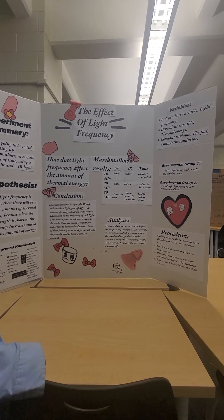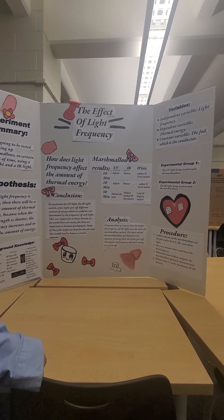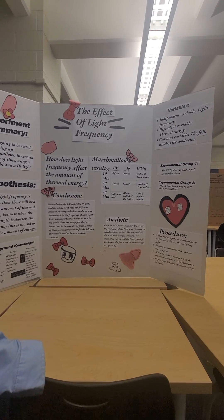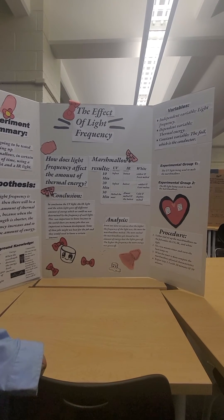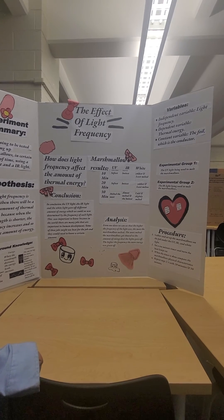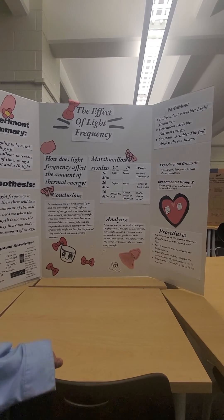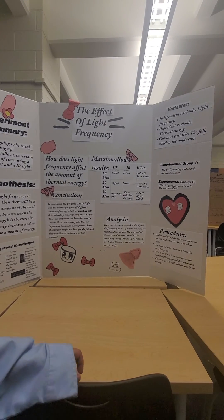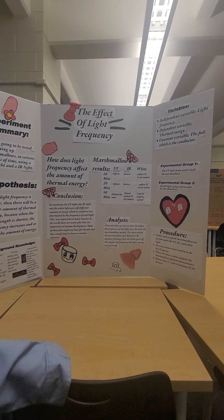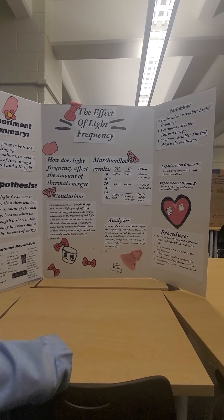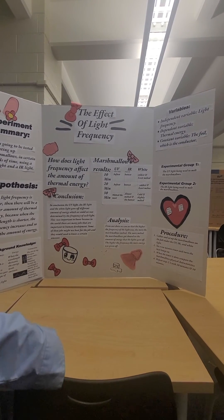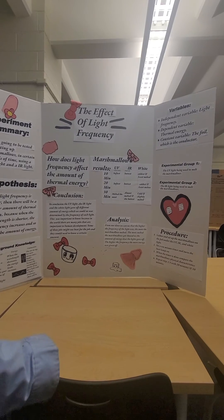Experimental group 1 was UV light with the marshmallows. Experimental group 2 was the IR light with the marshmallows. Experimental group 3 was the white light with the marshmallows. The procedure was to gather and set up the marshmallows on the foil under the UV, IR, and white light. Then set a 10-minute timer and turn the lights on.